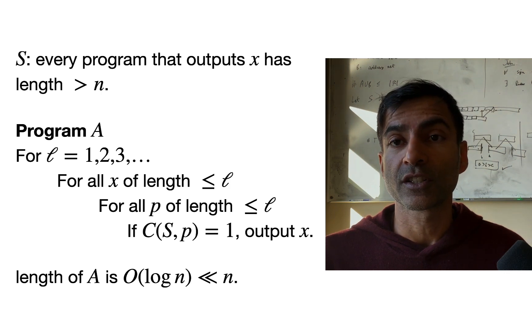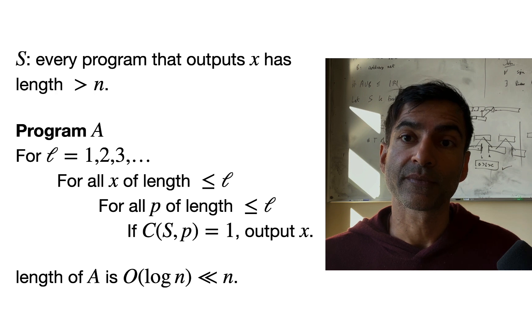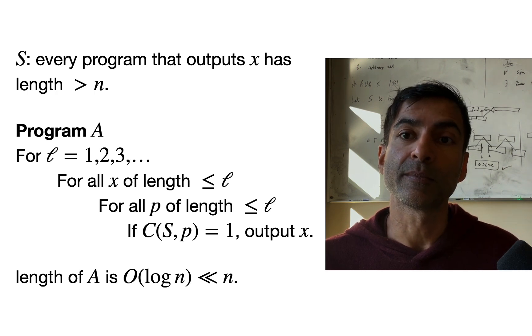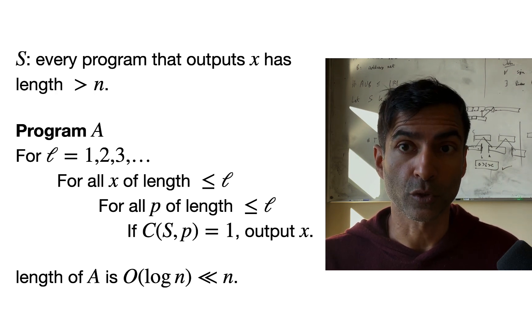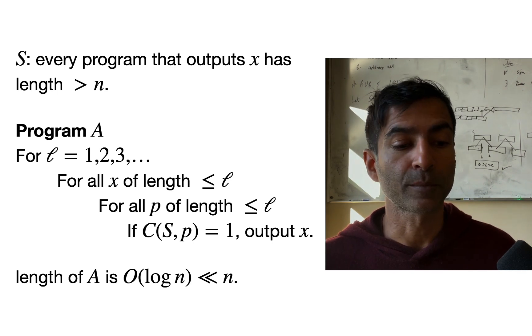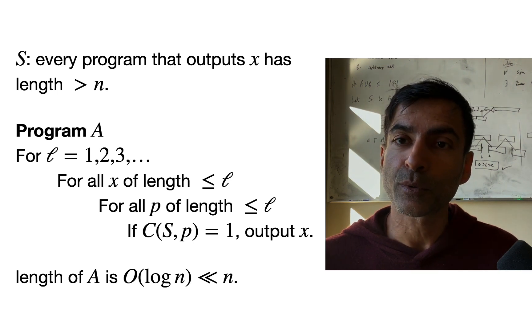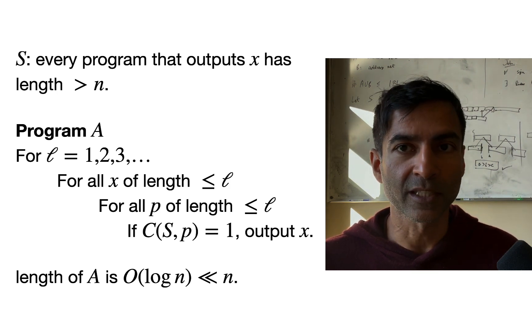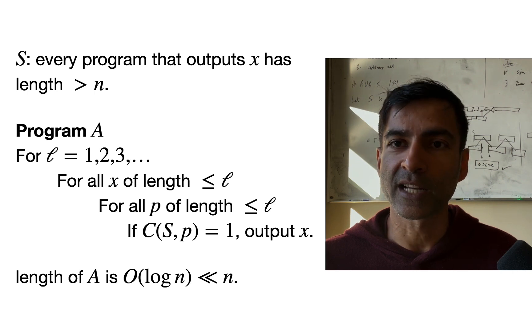So if n is very, very large, log n grows much slower than n. So if n is very large, n is going to be much bigger than the length of this program. n is going to be bigger than the length of the program. And if n is bigger than the length of the program, the program cannot possibly halt. It cannot halt with an output.